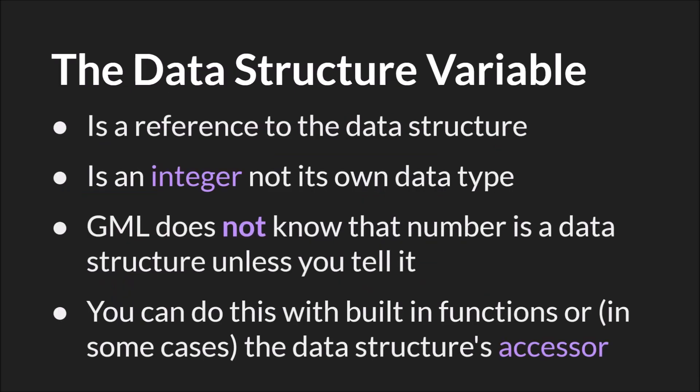The index is a reference to the data structure. It is an integer and not its own data type. And this is the very important part — GameMaker Studio 2 does not know that that number is a data structure unless you tell it. So whenever you are referencing or using a data structure, you must tell GameMaker Studio 2 that you are using a data structure and what type. There are really two ways to do this: you either use the built-in functions for that data structure, or in some cases you can use the data structure's accessor.